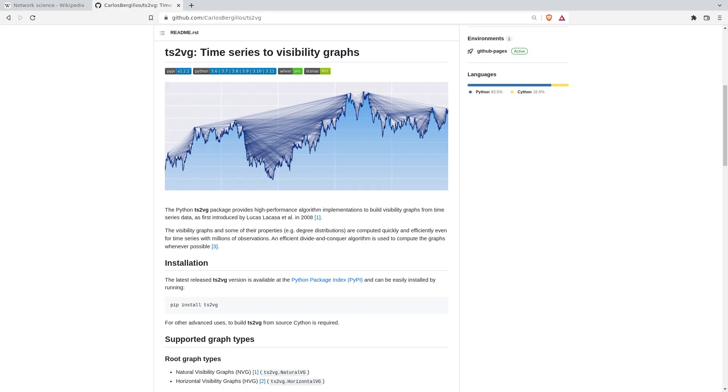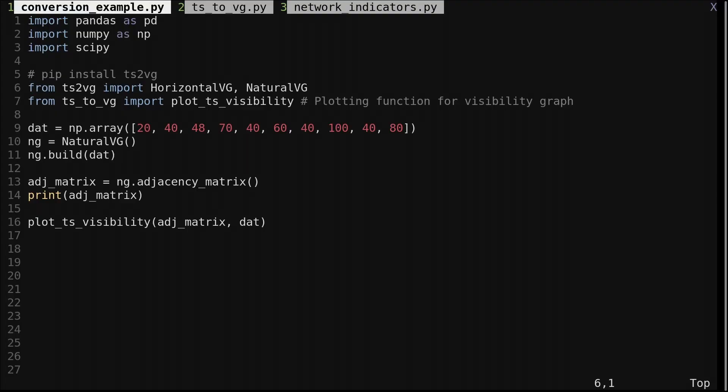But the Python module is done using Cython, so it is much faster, and I'll be using that. Here is the code to convert a time series to a visibility graph. First, we import natural visibility graph from the Python module.